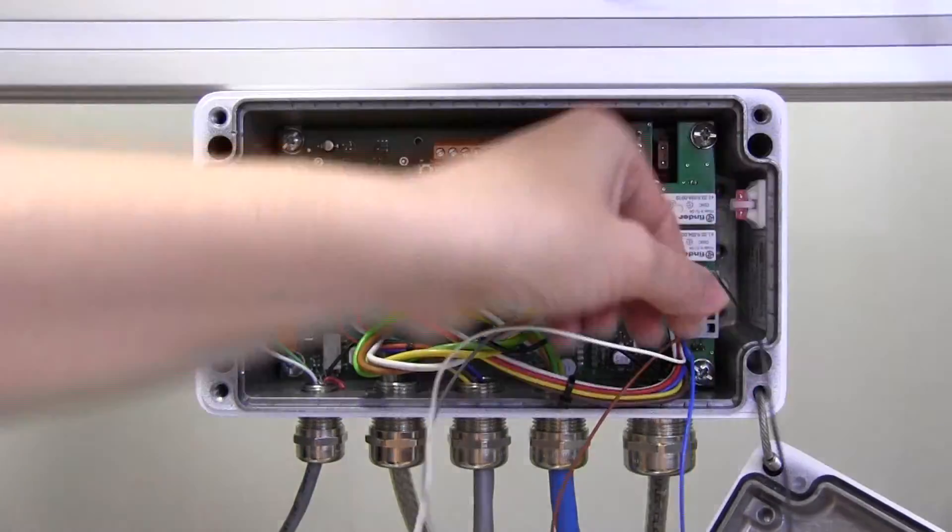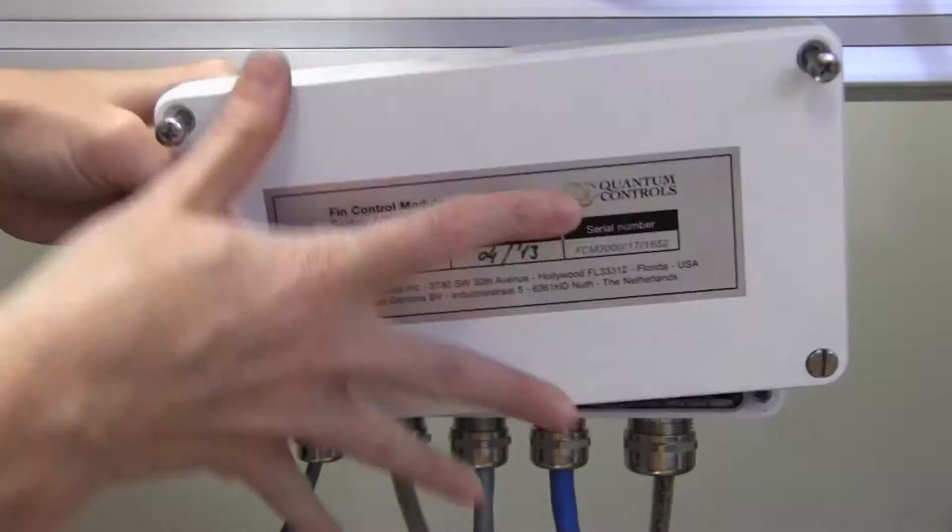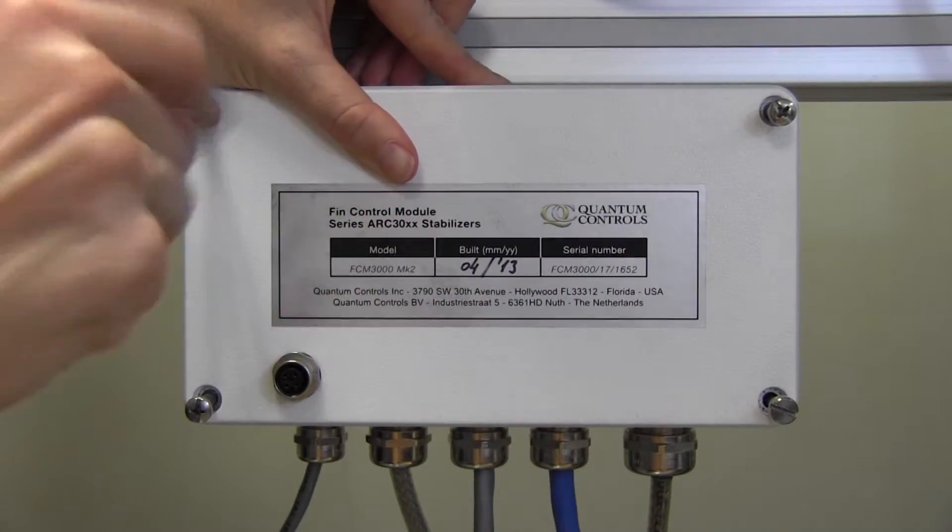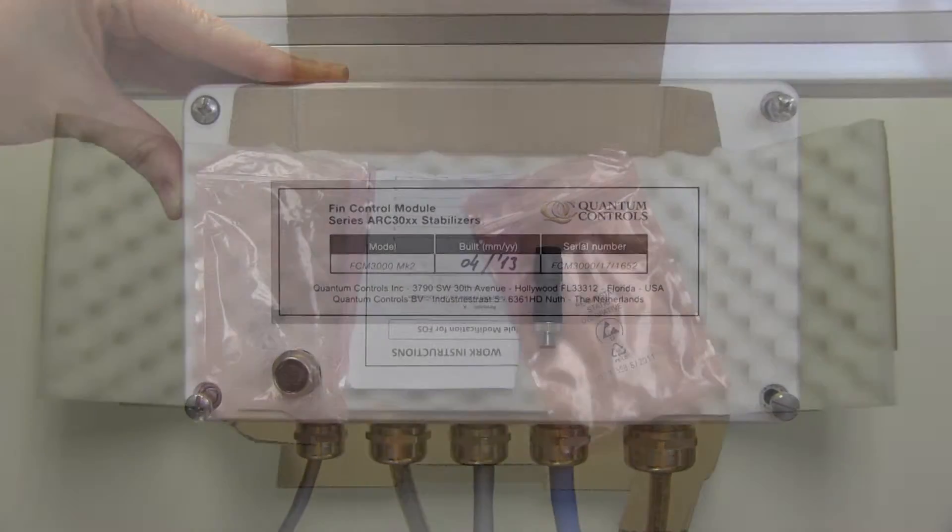Once this is done, use the Phillips head and large flat head screwdrivers to install the fin control module cover. Then, install the provided dummy connector onto the M12 connector on the fin control module cover.